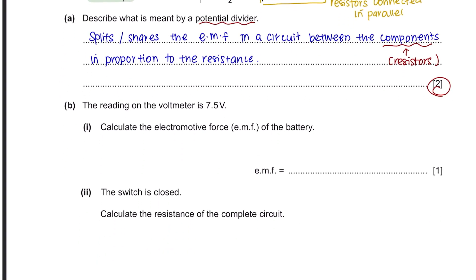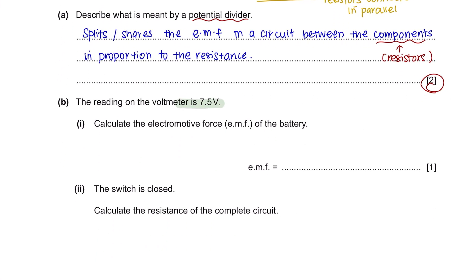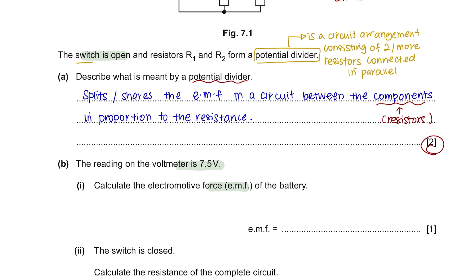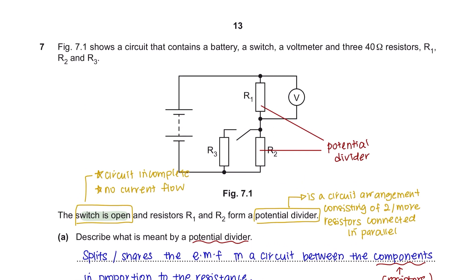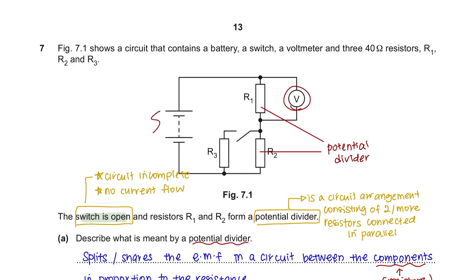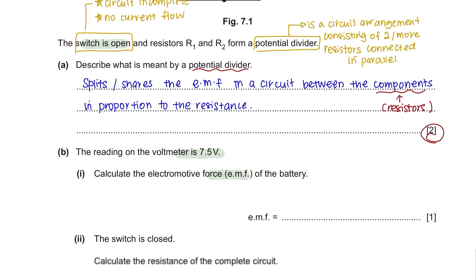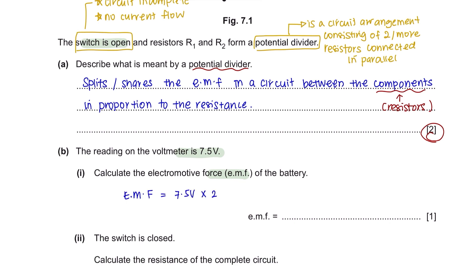Question B. The reading on the voltmeter is 7.5 voltage. Part 1: Calculate the electromotive force of the battery. It's mentioned here that the switch is open. This means that the circuit is incomplete and no current flows through it. So this means that the voltmeter reading is actually the EMF of the battery. Since there are two batteries here, the electromotive force of the battery will be 7.5 voltage times 2 which gives us a value of 15 voltage.